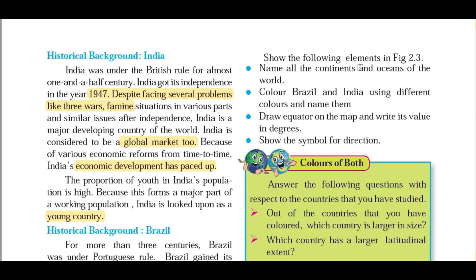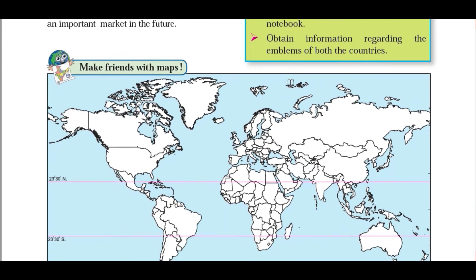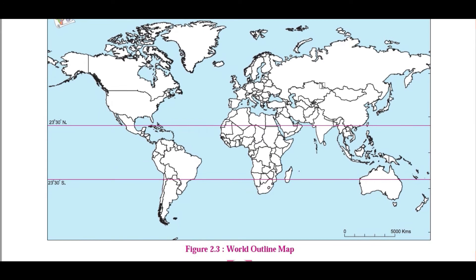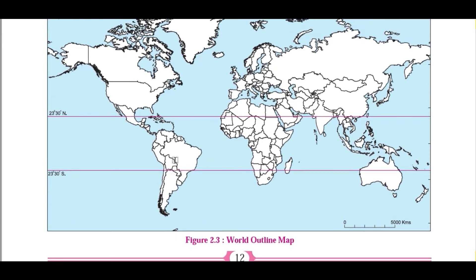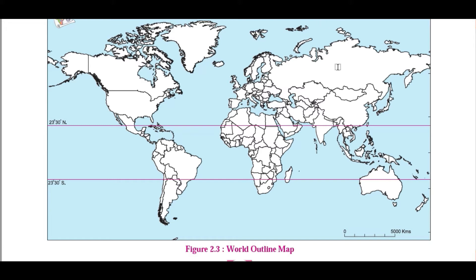Brazil's population is the fifth largest in the world. Now, show the following elements in figure 2.3 — the continents and oceans of the world. On the world map, there are seven continents. The biggest is Asia, then Africa, then North America, then South America, then Europe, then Australia, and in the southern part, Antarctica. This order is also the order according to area — Asia is the largest, Africa second, North America third, South America fourth, Europe fifth.